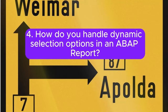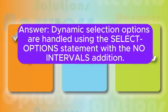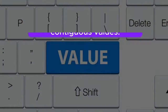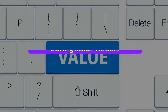Question 4: How do you handle dynamic selection options in an ABAP report? Answer: Dynamic selection options are handled using the SELECT-OPTION statement with the NO INTERVALS addition. This allows users to input non-contiguous values.